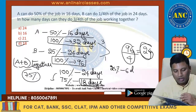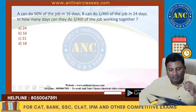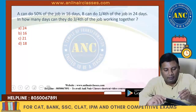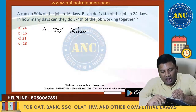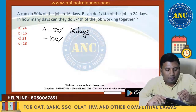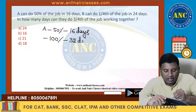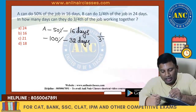You can also use the percentage method here since answer options are a little far from each other. A does 50% in 16 days → 100% in 32 days → rate = 1/32, which is approximately 3%.